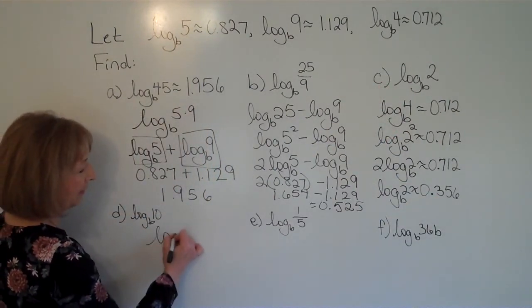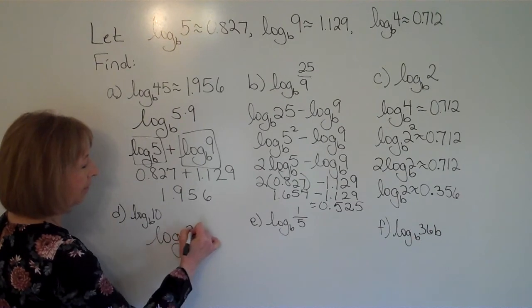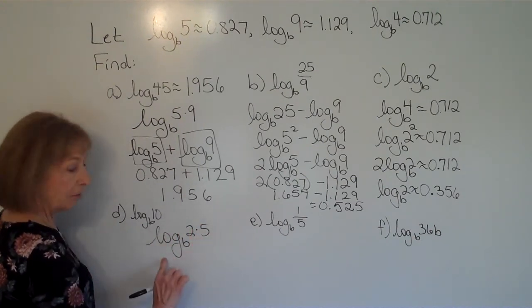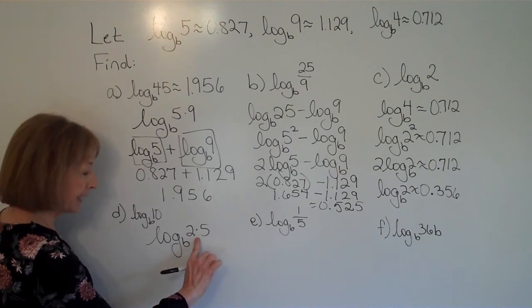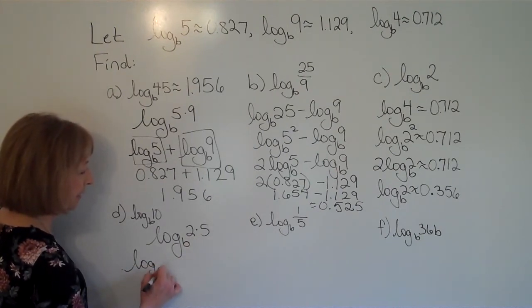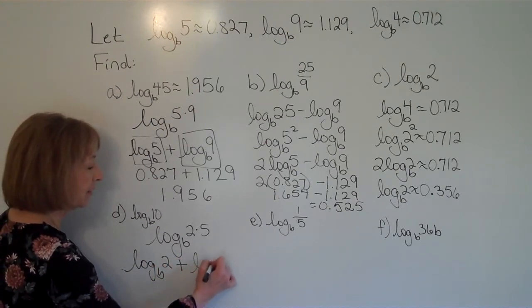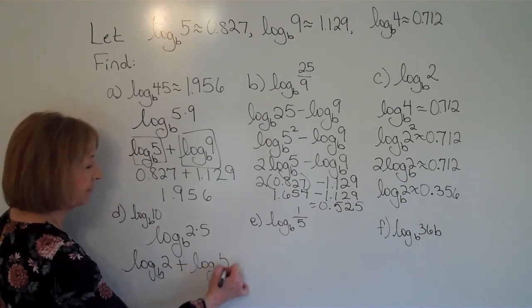So this is the log base b of 2 times 5 to get your 10. But the log base b of a multiplication is the log base b of the first factor 2 plus the log base b of the second factor 5.